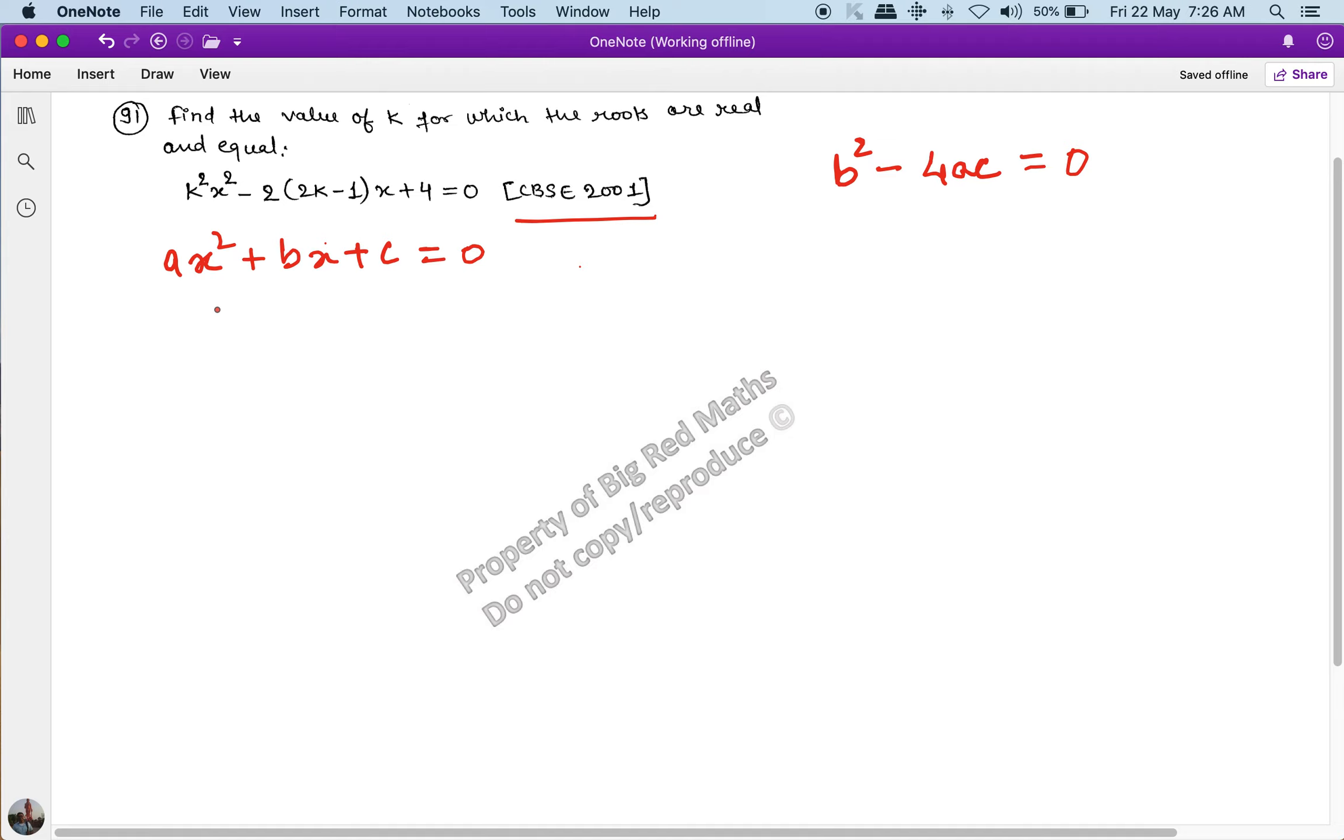If I compare the coefficients of x², x, and the constant term in the two equations, I get: a = k², b = -2(2k - 1), and c = 4.